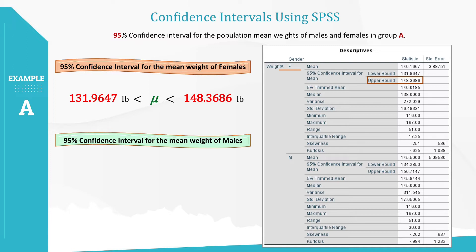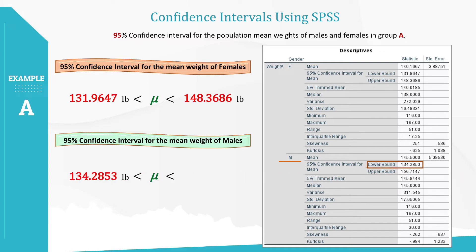Let's construct the interval for males in the same way. The output shows the lower bound value, so it is the lower confidence limit value. Similarly, it shows the upper bound value in the output, which becomes the upper confidence limit value. So we are 95% confident that the population mean weight of males in Group A is between 134.2853 pounds and 156.7147 pounds.